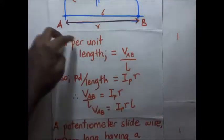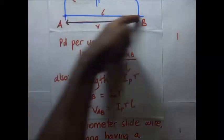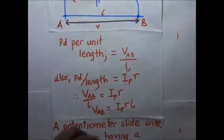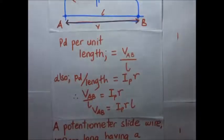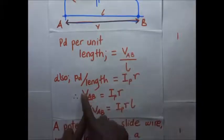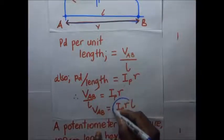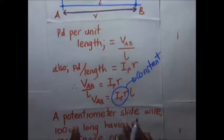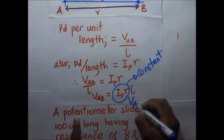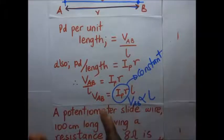So there are two ways to find PD per unit length: divide the PD across AB by the entire length, or multiply the current going through the wire by the resistance per unit length. Equating both methods: V_AB over L equals IP times R. Since the driver current IP and the resistance per unit length R are constants, the PD across AB is directly proportional to L — the longer the length, the higher the potential difference; the shorter the length, the smaller the potential difference.